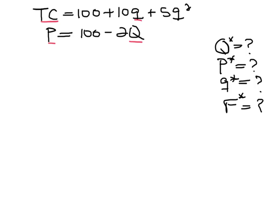So what do we know about the long-run equilibrium? Well, we know that at the long-run equilibrium, the price equals the average total cost, and furthermore, we know that the marginal cost equals the average total cost at the firm level. These two equations will give us enough information to solve for all these variables.